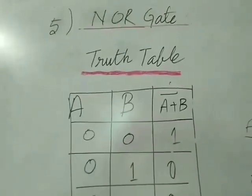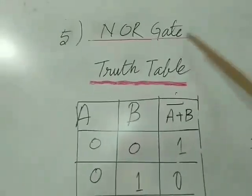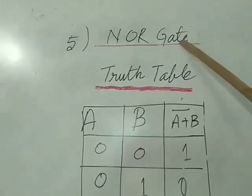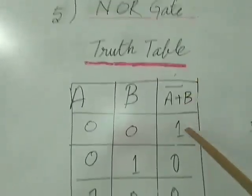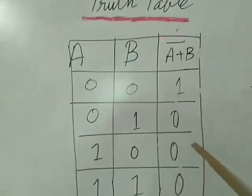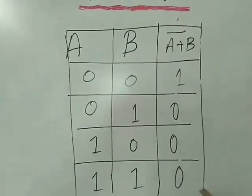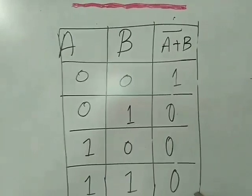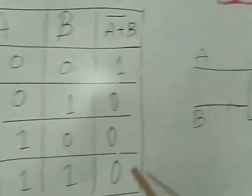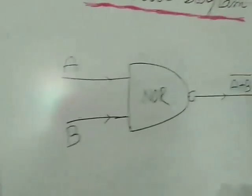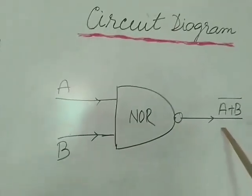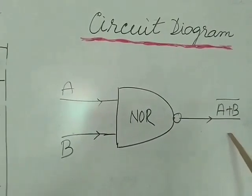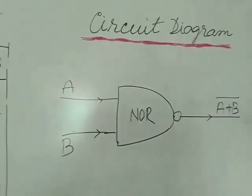The truth table for the NOR gate — the output is just the opposite of the OR gate. The circuit diagram looks like this. You have to memorize this circuit diagram.